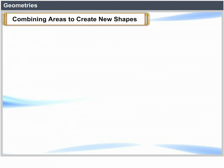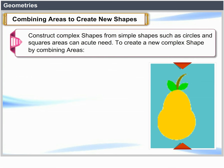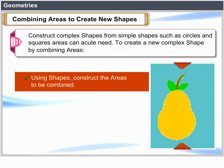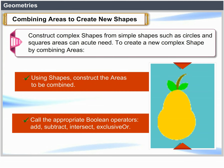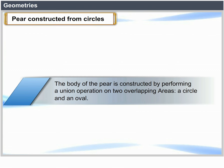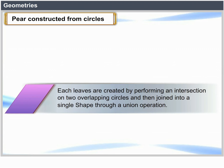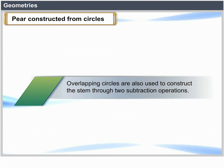Combining areas to create new shapes: You can construct complex shapes from simple shapes such as circles and squares. To create a new complex shape by combining areas, use shapes to construct the areas to be combined, then call the appropriate Boolean operation — add, subtract, intersect, or exclusive OR. For example, a pear constructed from circles: the body is formed by a union of two overlapping areas — a circle and an oval. Each leaf is created by performing an intersection on two overlapping circles then joined through a union. Overlapping circles are also used to construct the stem through two subtraction operations.